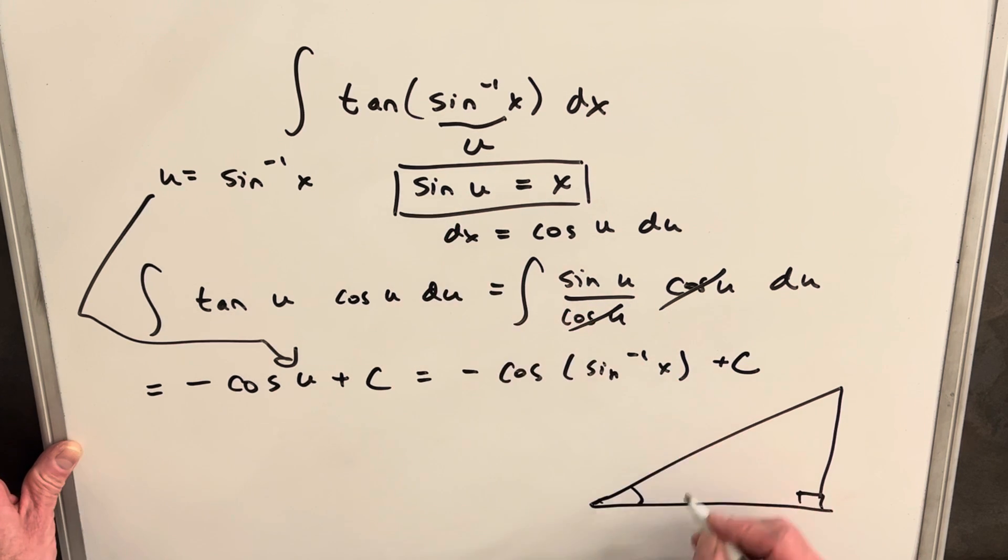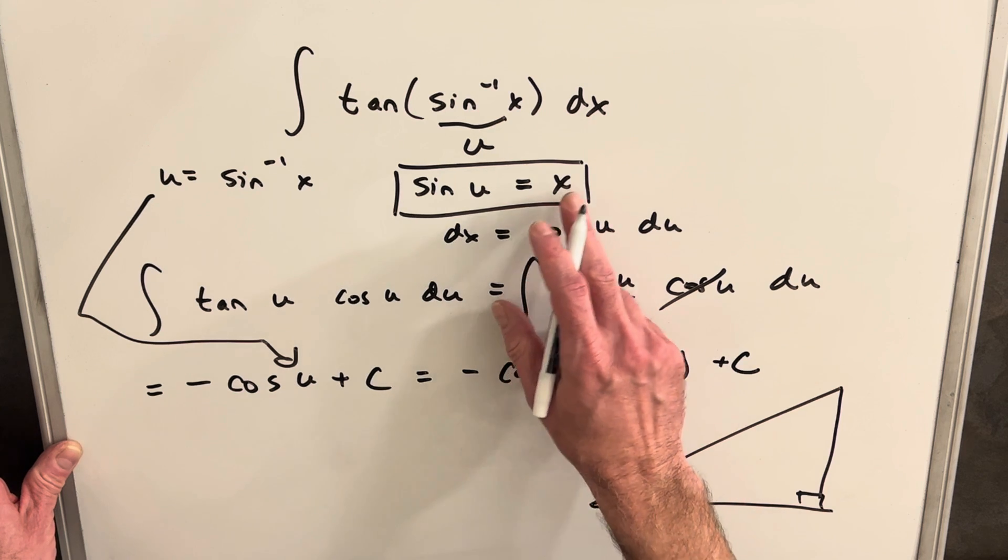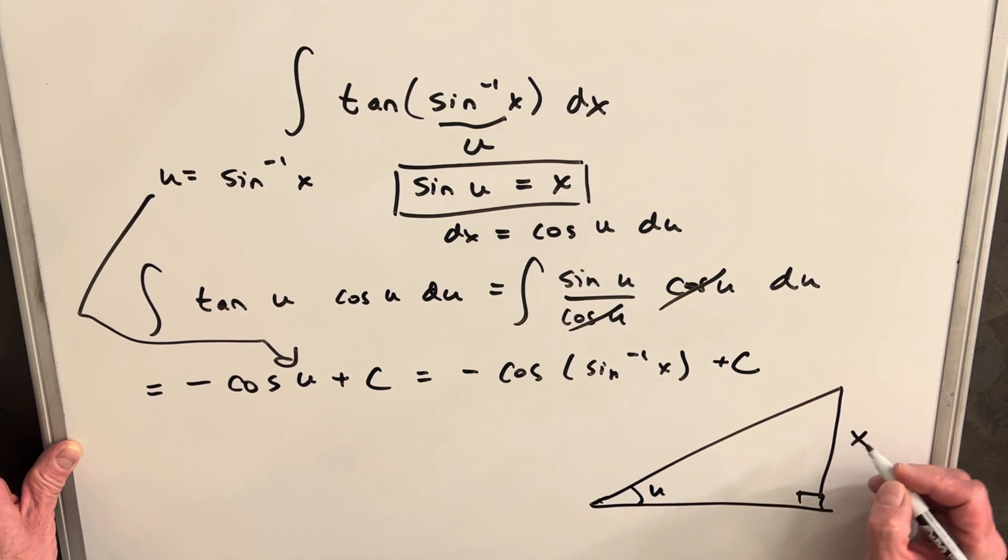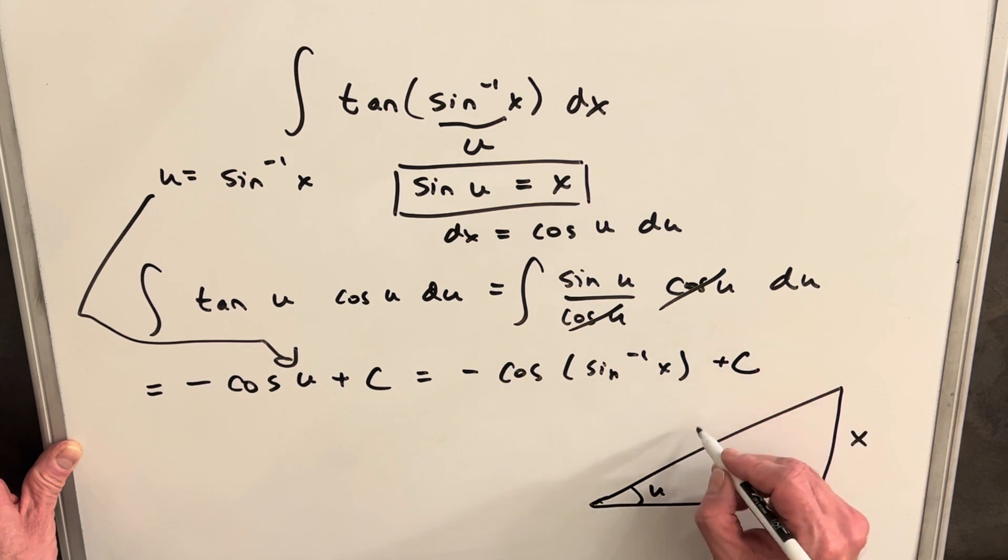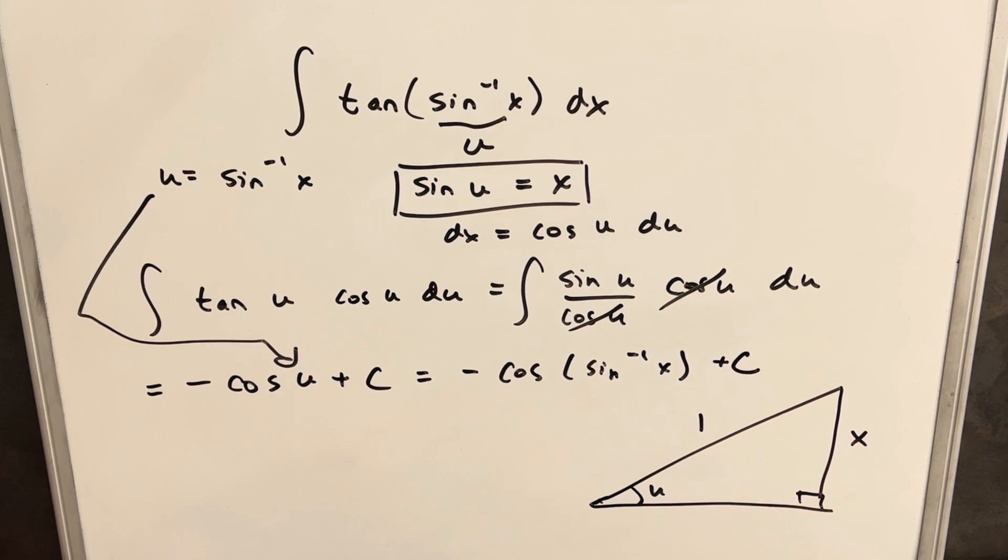So then our angle is going to be u. If sine is x, we could put an x there, opposite over hypotenuse. So that's going to be a 1. Then if you just use the Pythagorean theorem to solve for one side, this side is going to be sqrt(1 - x^2).